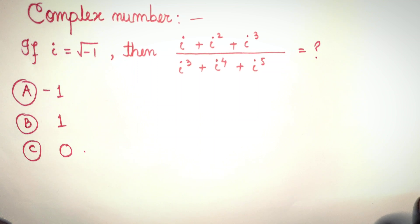Hi guys, today we are going to be solving some problems of complex numbers. Today's question is: if iota is equal to root over minus one, then we will be finding the value of i plus i squared plus i cubed divided by i cubed plus i to the power four plus i to the power five. Is it option A minus one, or is it option B one, or is it option C zero? Let's find out.